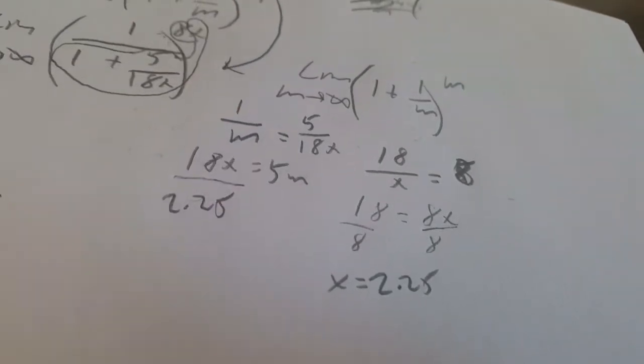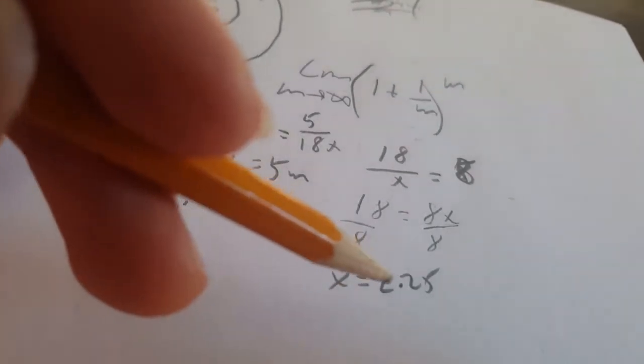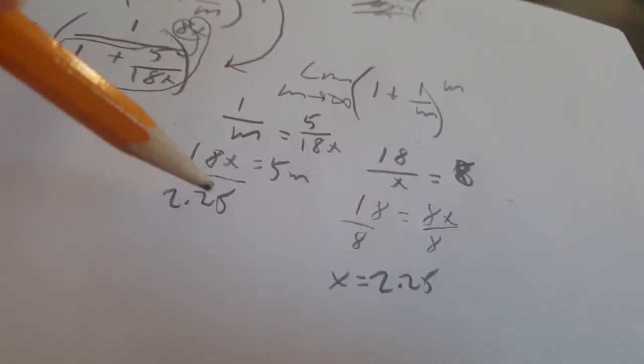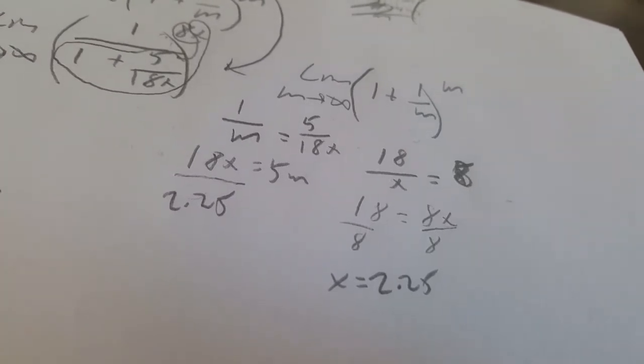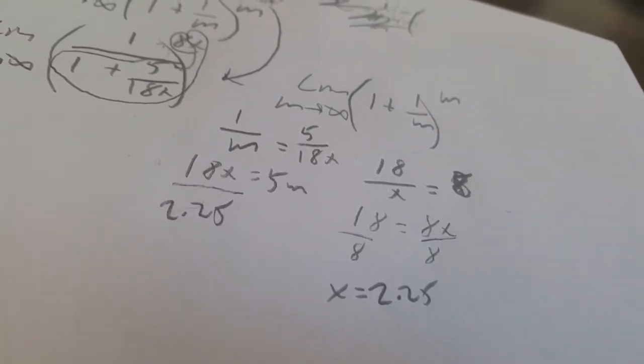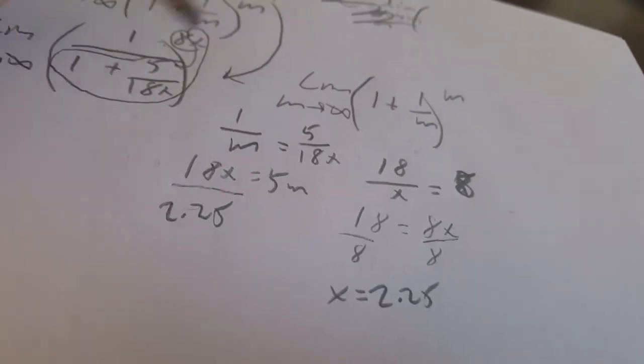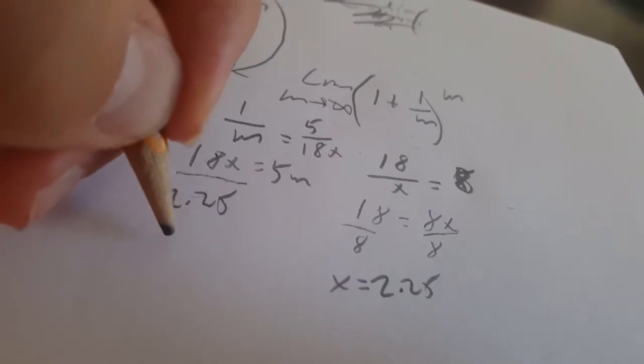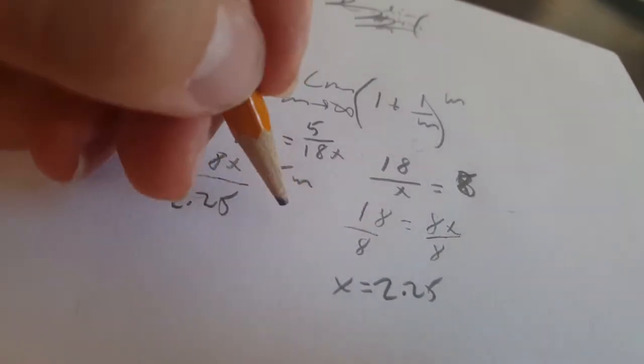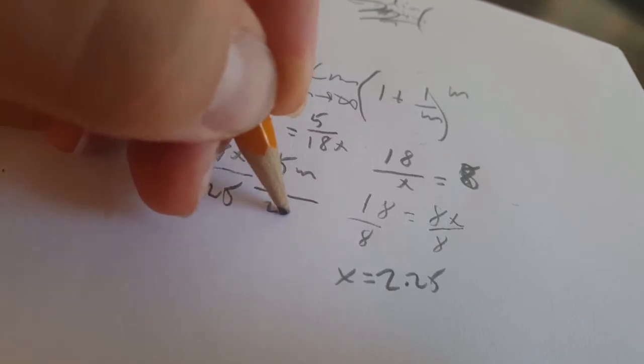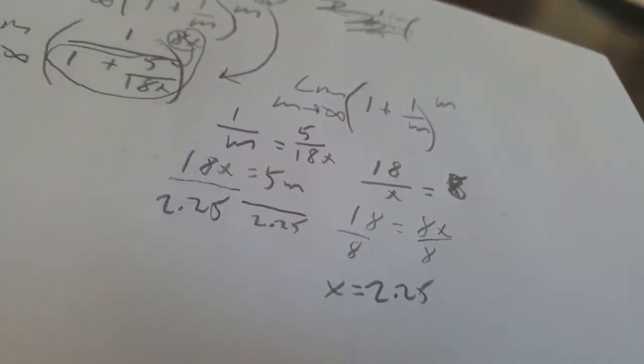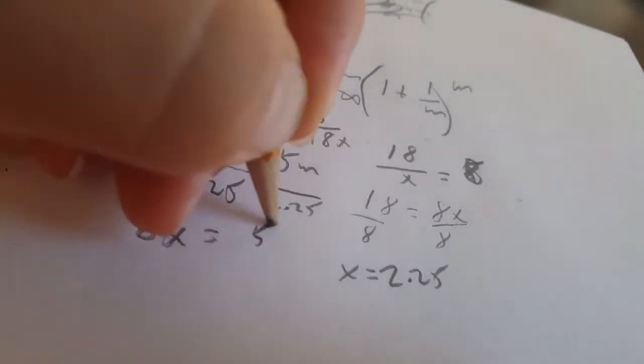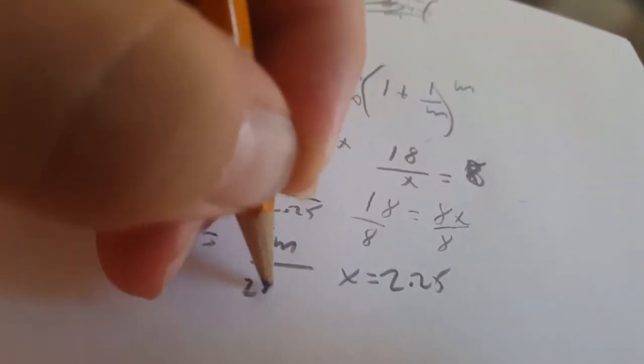If you don't have a calculator on a test, don't bother computing this. Just do 18 over 8, and then you can multiply. That might be doable, but actually, don't worry about that. Just do, okay, forget it. So, we can divide that on both sides. Very important, don't forget to do that. So, that we get 8x equals 5m over 2.25.